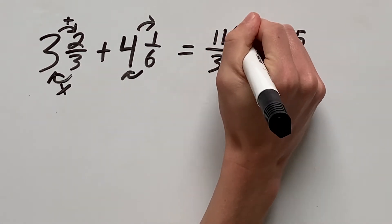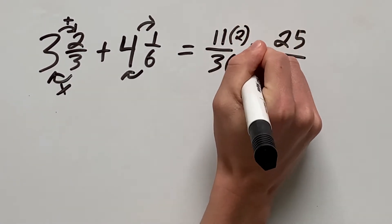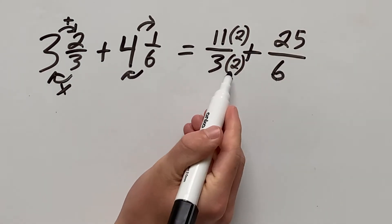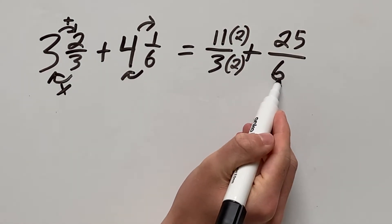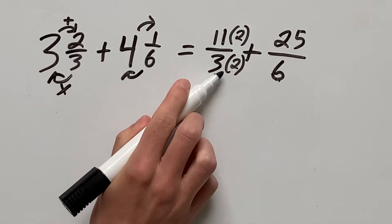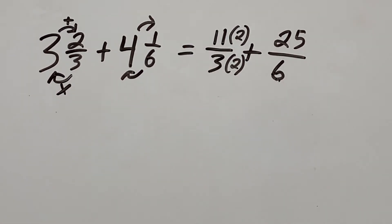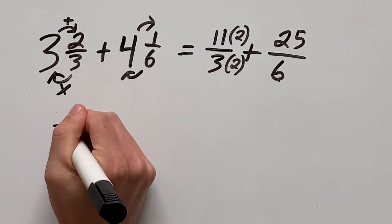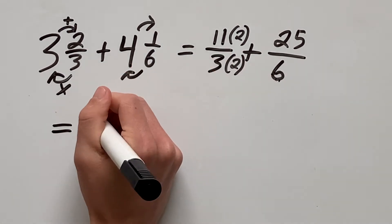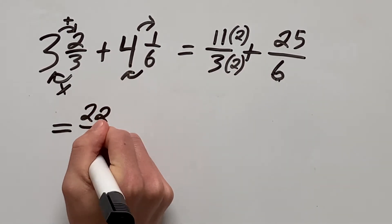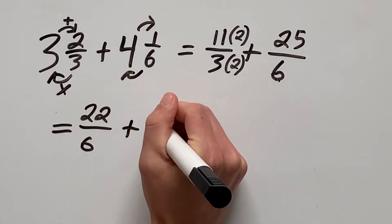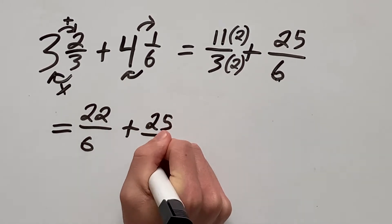To get 6, we have to multiply this fraction by 2 because 2 times 3 is 6. And remember, whatever you do to the bottom, you also have to do to the top. So that will give us a new problem of 22 over 6 plus 25 over 6.